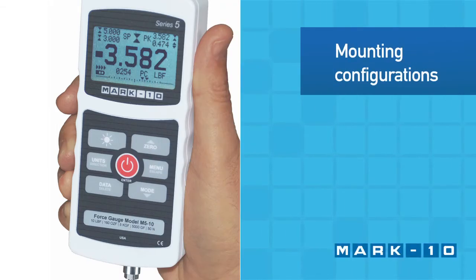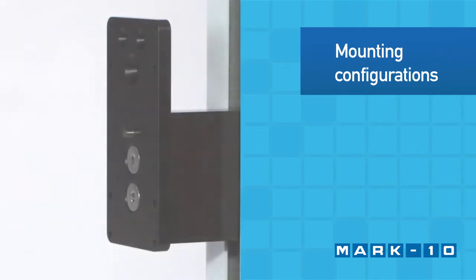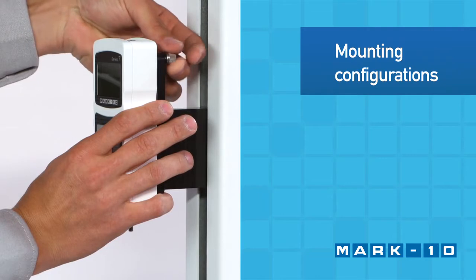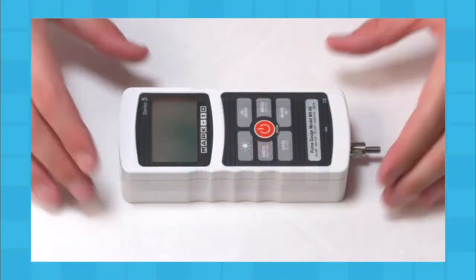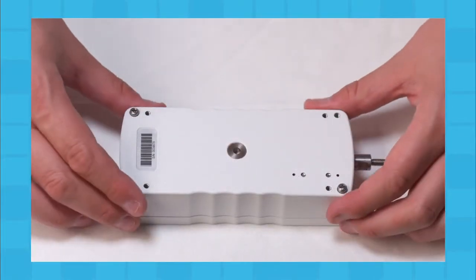Use the force gauge handheld or mount to a test stand for more controlled testing. Match the hole in the rear of the housing with the dowel pin located on the test stand's mounting plate. To accommodate handheld or test stand mounting, the orientation of the load cell shaft may be flipped while the keypad and display remain upright.